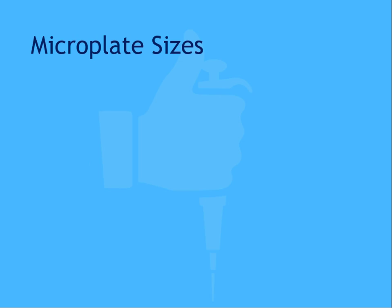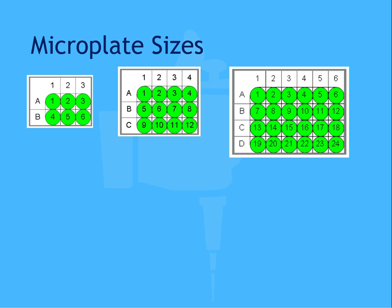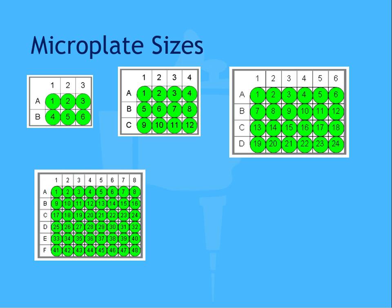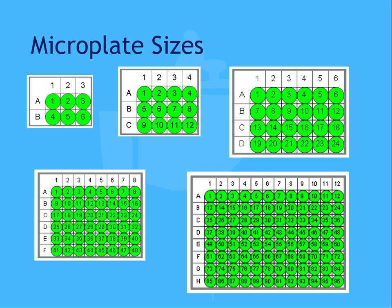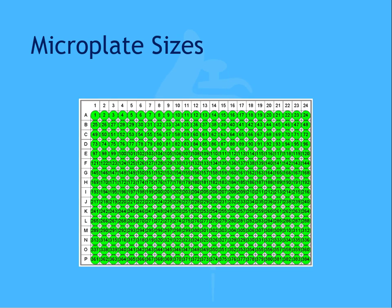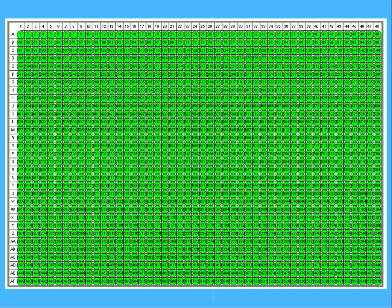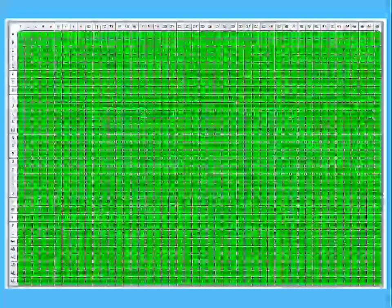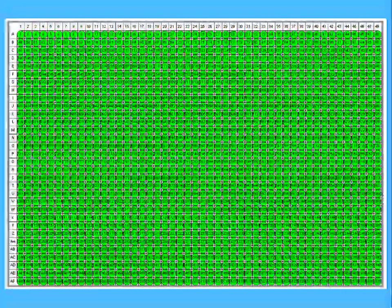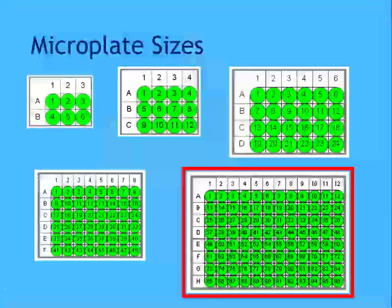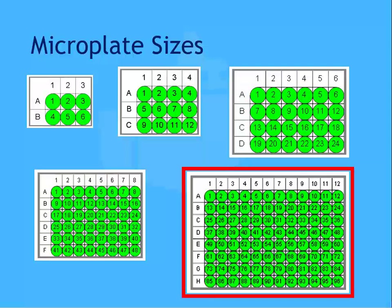Microplates can be configured in a number of different sizes: 6-well, 12-well, 24, 48, 96, 384-well, and even 1,536-well arrangements. The most common microplate size is the 12 by 8, 96-well format, which is what we'll use for these examples.